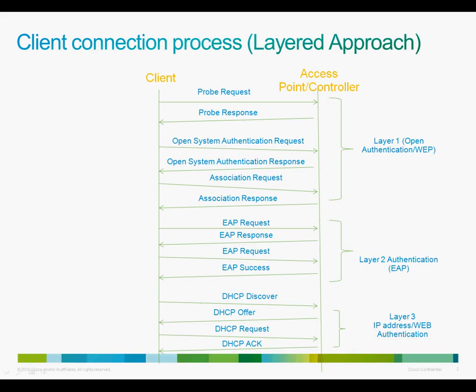At layer 2, based on the use of pre-shared key or 802.1x based authentication, there will be several exchanges of EAP packets. If the authentication is successful, there will be an EAP success packet. At this time, the client has completed layer 2 authentication. The client will now follow the DHCP process to get an IP address. Once the client receives an IP address, it is ready to pass traffic.